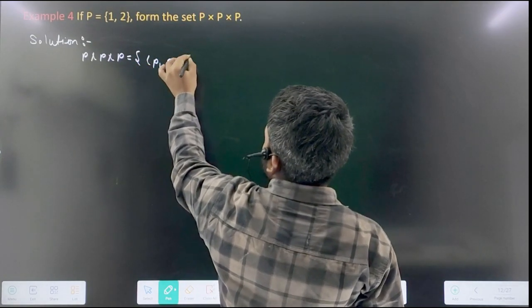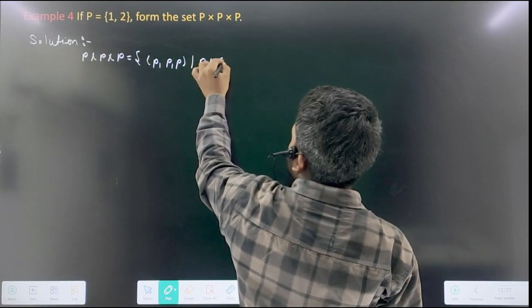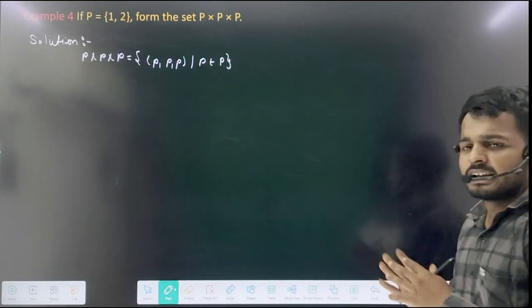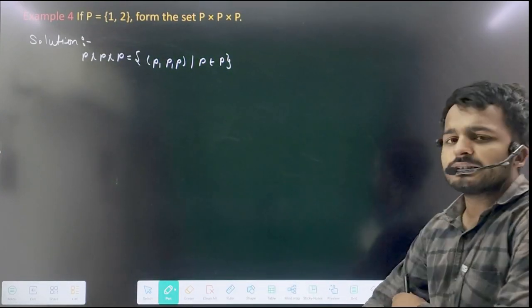Small p, small p, such that p belonging to P. Okay, this is the set of P.